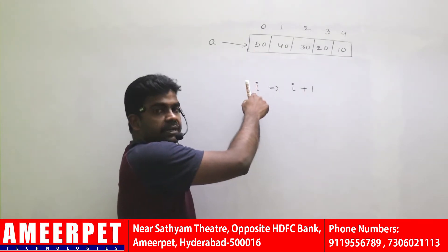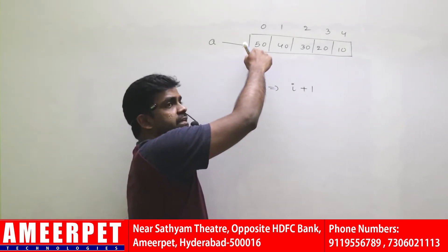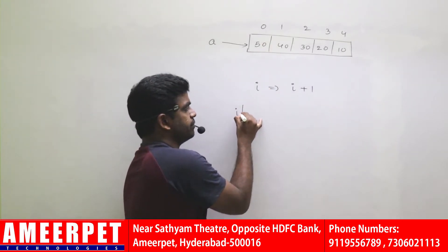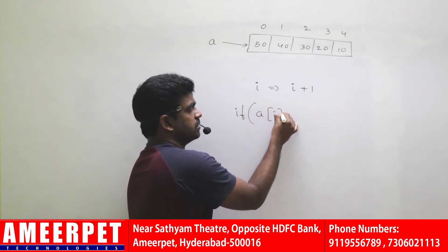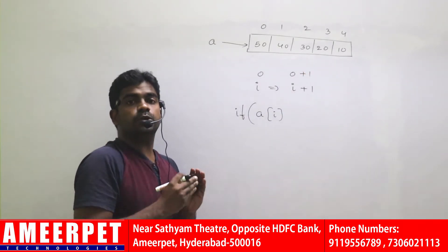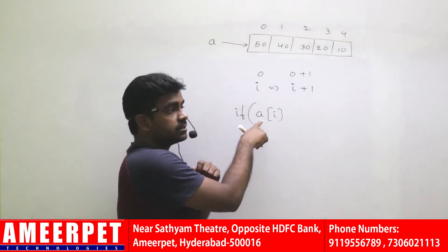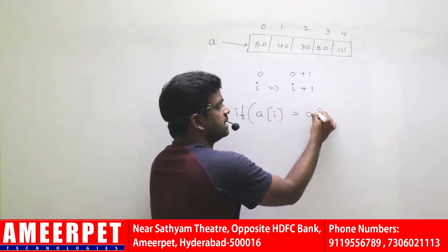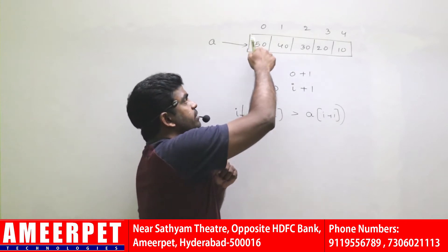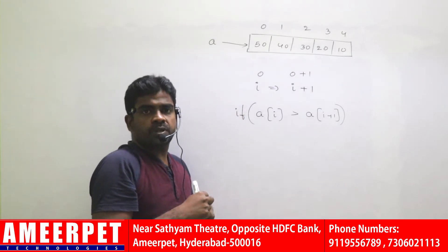The ith location element is comparing with the i plus one location element. See here, 50 is for example comparing with the next element. Just with the condition: if A of i — consider i value is 0, so 0 plus one value is 1 — the 0th location element comparing with the first location element. So if A of i, the 0th location element, is greater than A of i plus one, the first location element — look at this, 50 is greater than 40 — condition is true. Then we need to swap them.